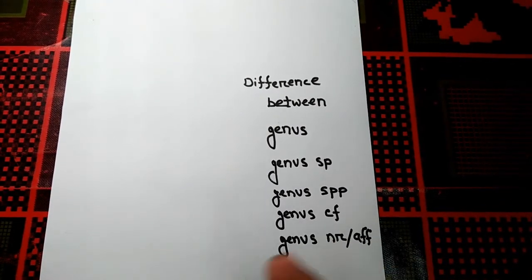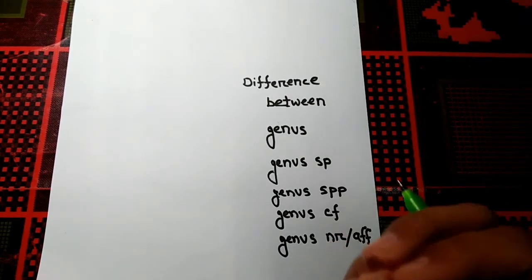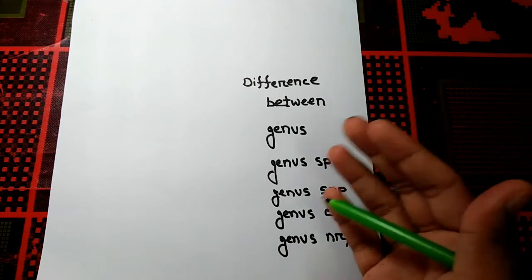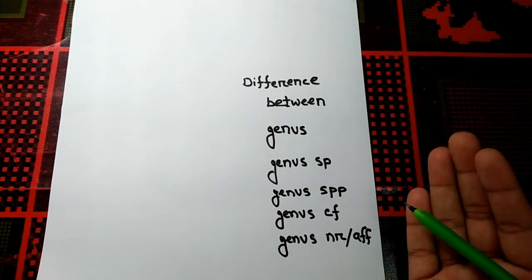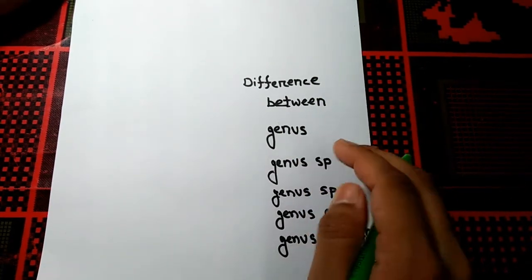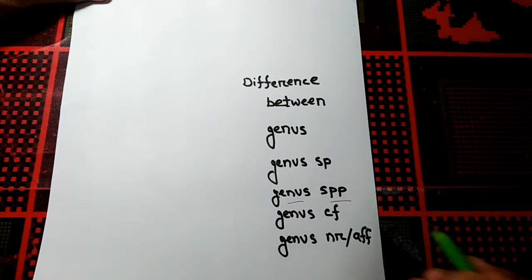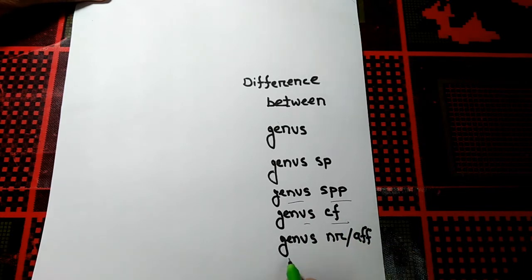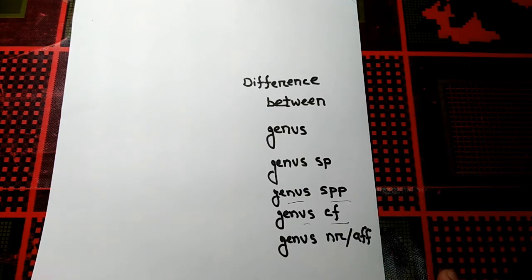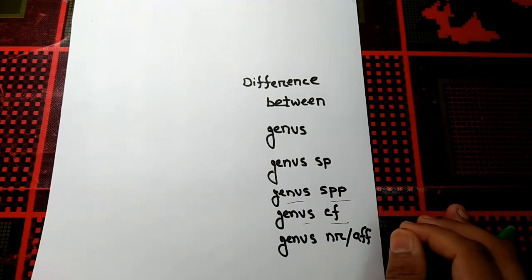Hello everyone. Today I'm going to discuss a common confusion regarding taxonomy. The confusing terms are the differences between genus, genus sp., genus spp., genus cf., and genus aff. After watching this video, I think all your confusion regarding this topic will be gone. I want to represent this video in a laconic way, so let's begin.